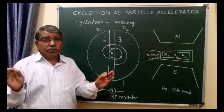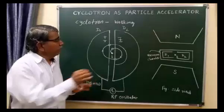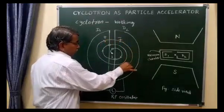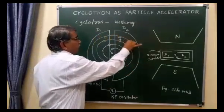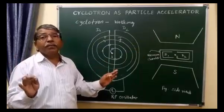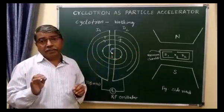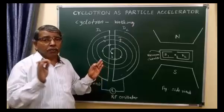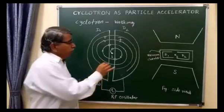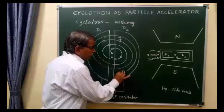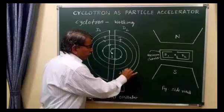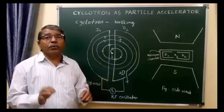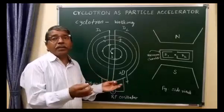This process continues further, and finally this positive ion will be accelerated. When this positive ion reaches the periphery of the D's, the maximum accelerated positive ion will be taken out from the circular path to the linear path by using a deflector. This highly accelerated positive ion is then allowed to hit the target for further nuclear study.